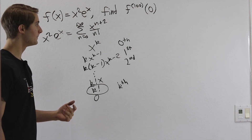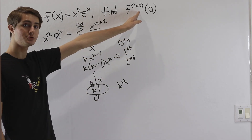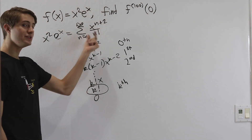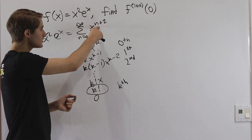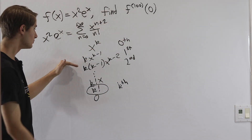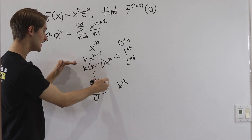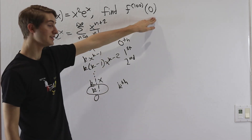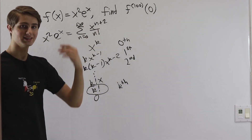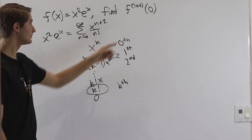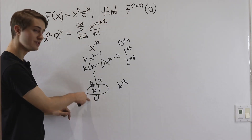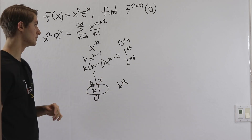Now we want to think about what happens when we differentiate 100 times. For any term in the series where the exponent is greater than 100, differentiating 100 times still leaves some power of x, which vanishes when evaluated at zero. Similarly, if the exponent is less than 100, differentiating 100 times takes us past the constant to zero. So both cases vanish.